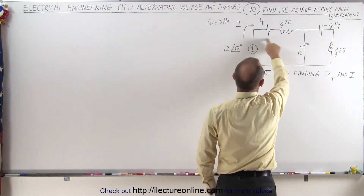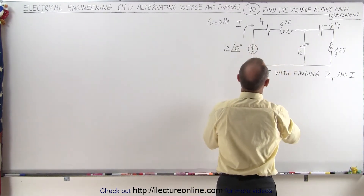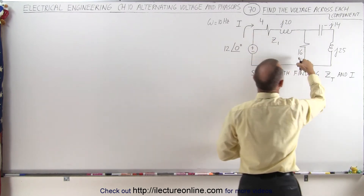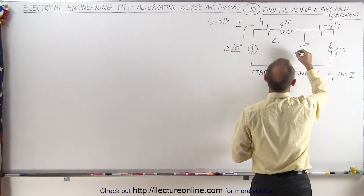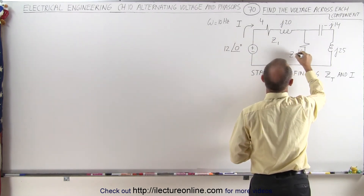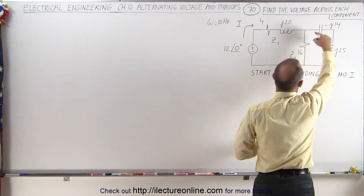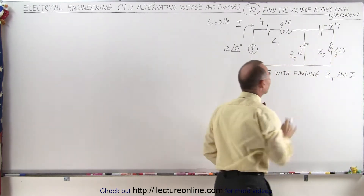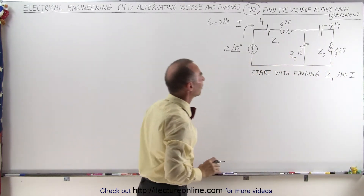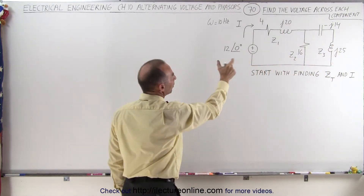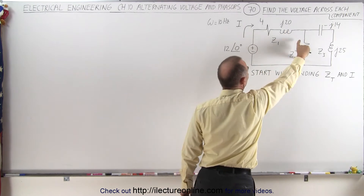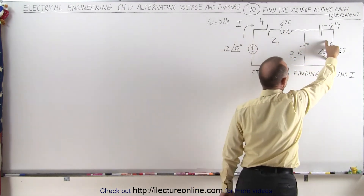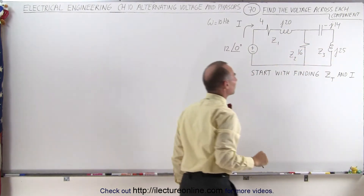Let's start with the impedance here — let's call this Z1, let's call this Z2, and let's call the impedance over here Z3. So Z1 will be the impedance over here, Z2 will be the impedance there, and Z3 will be the impedance there.